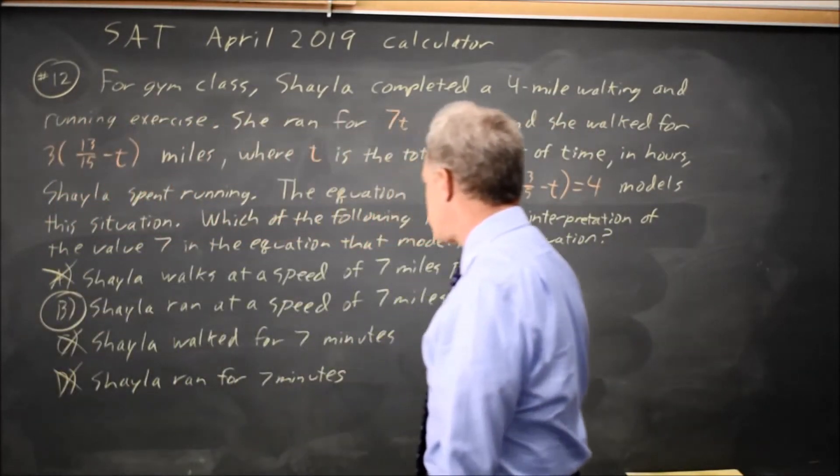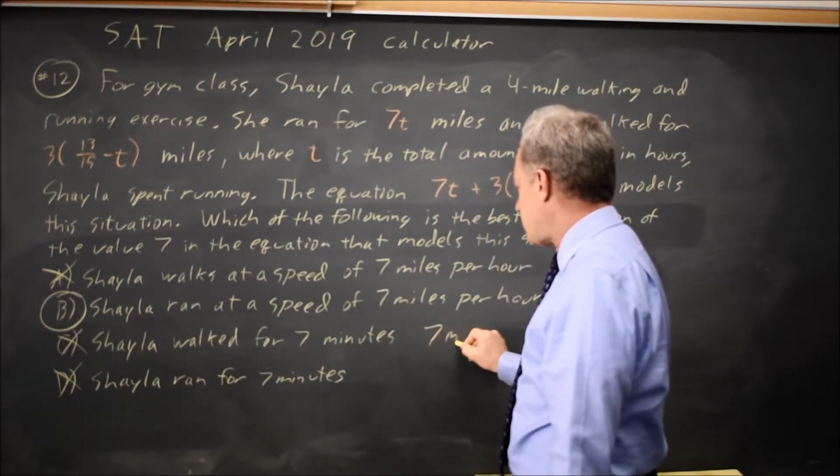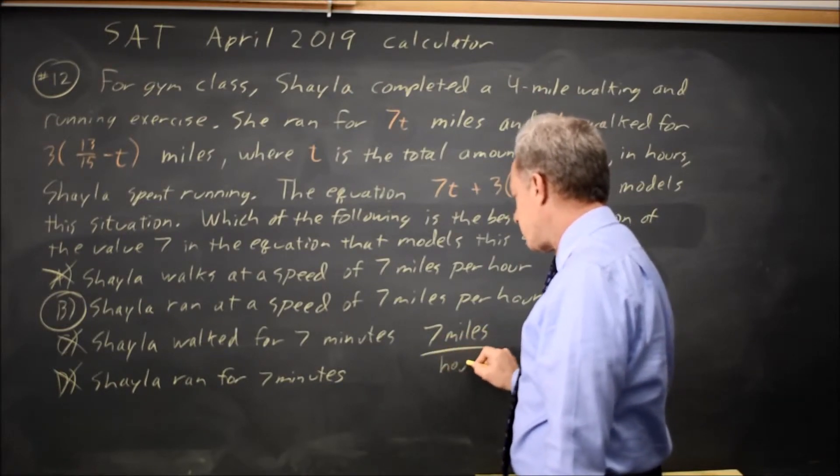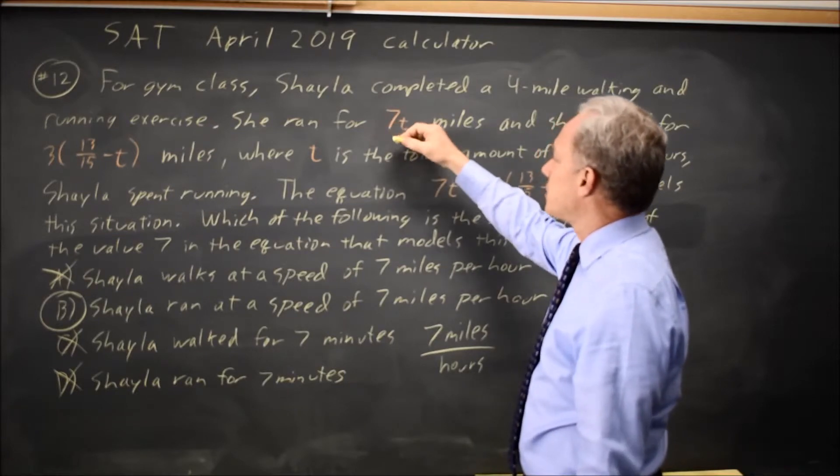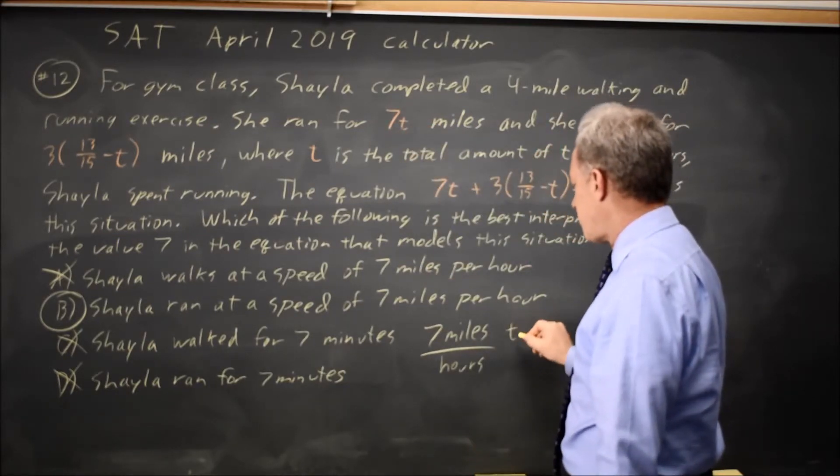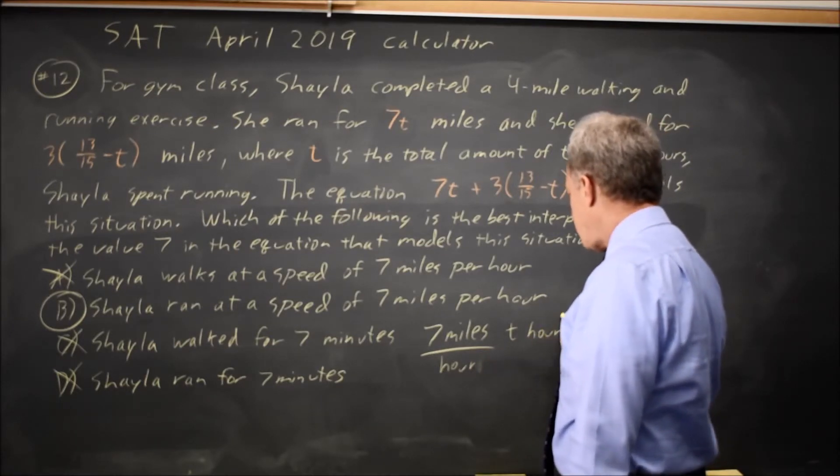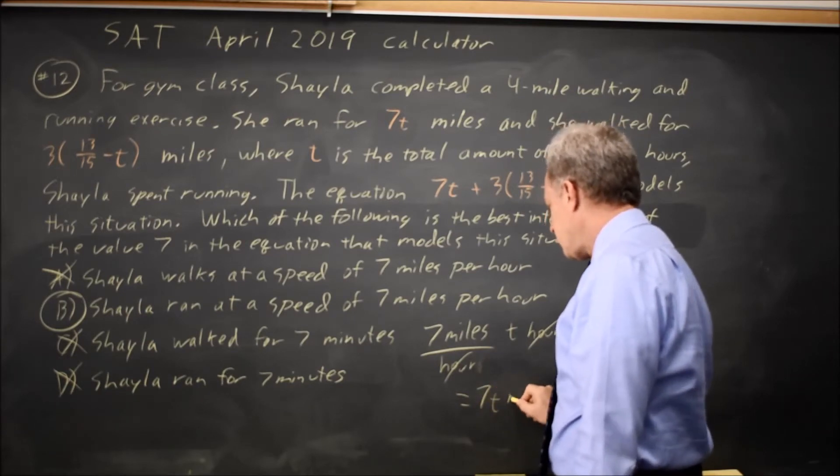We can conclude it's choice B, but let's look at that. 7 miles per hour is miles per hour, which is miles over hours, and we're multiplying that 7 in miles per hour by t, where t is the number of hours. So, 7 miles per hour times t hours, and the hours will cancel, leaving 7 times t miles.